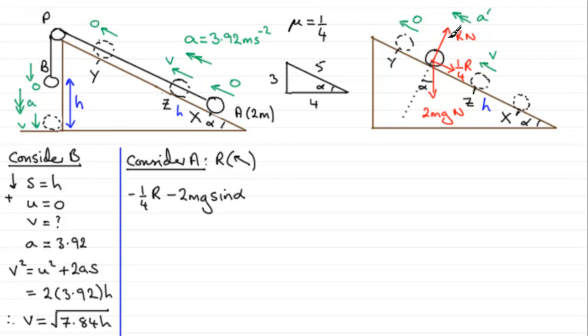As for R, well that has no effect because it's perpendicular to the direction that we're resolving in. So this is the resultant force acting on the particle A, and that is equal to the mass times acceleration. The mass of A is 2m, so we've got 2m, and the acceleration is A prime.